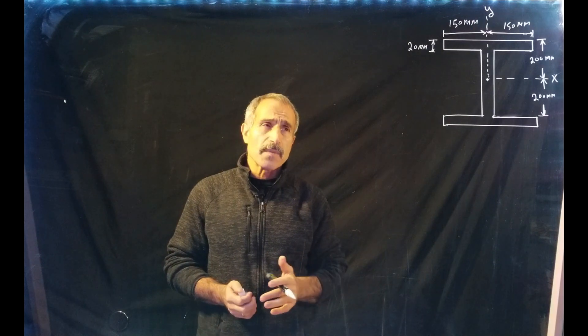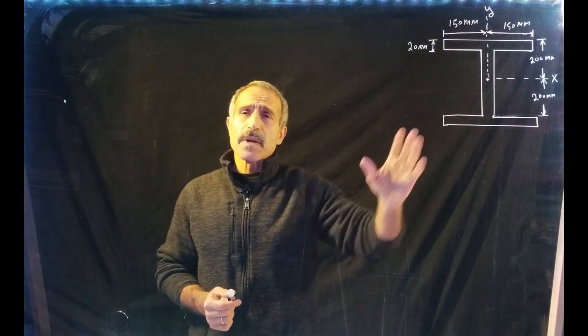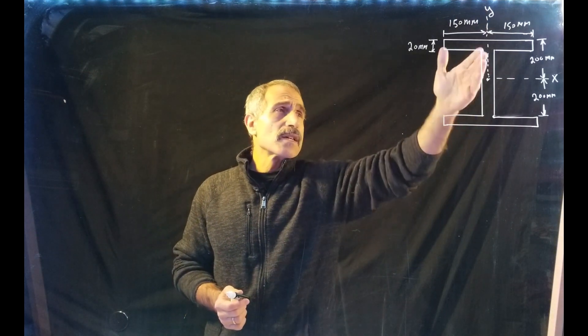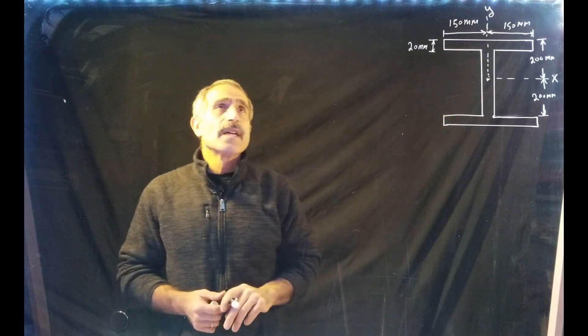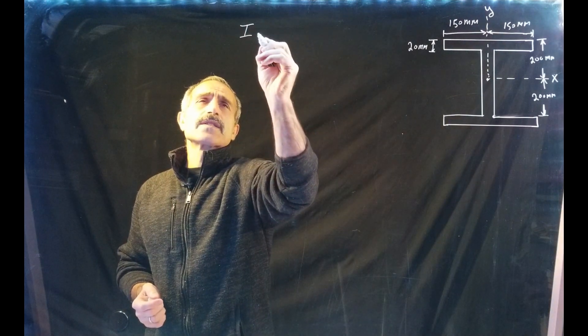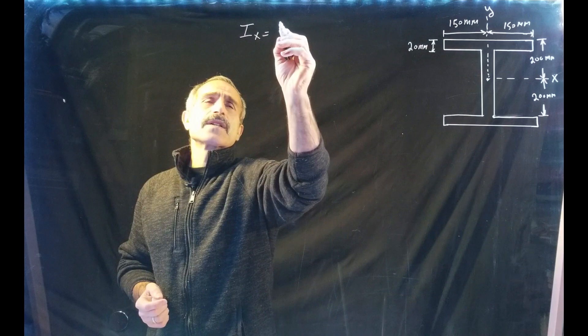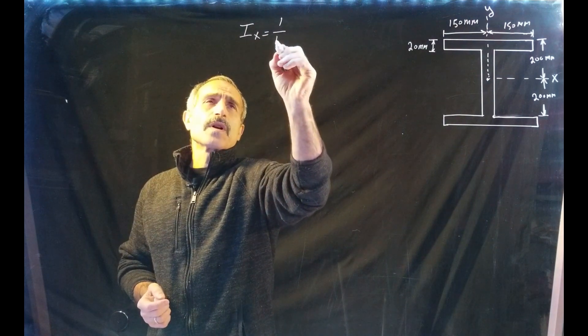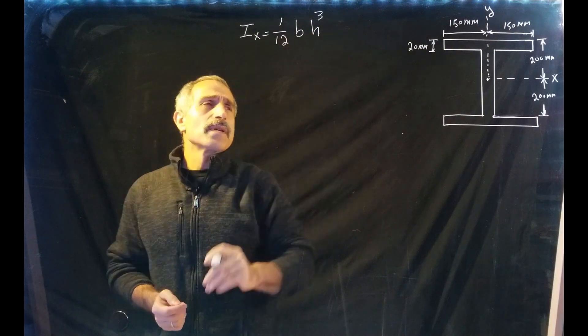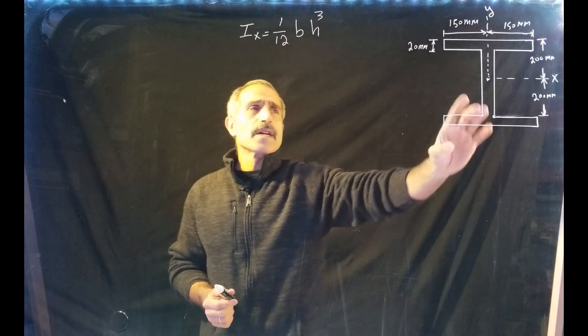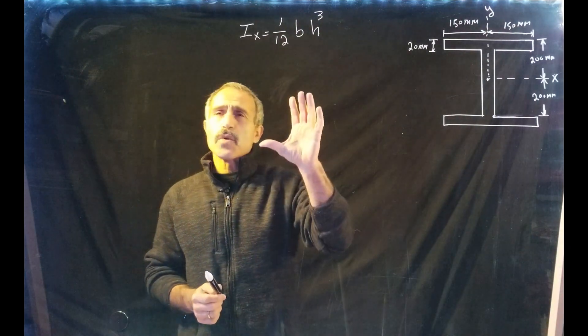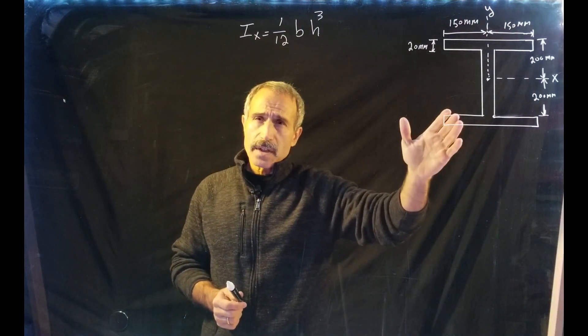This I-beam is made of three rectangular segments: this is rectangular, rectangular, and rectangular. And Ix for a rectangle is normally - Ix in the x direction is equal to 1/12 times b times h cubed. B will be the width, h will be the height, and that's if you take the moment of inertia about the centroid of the shape itself.